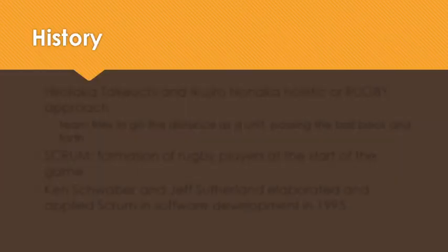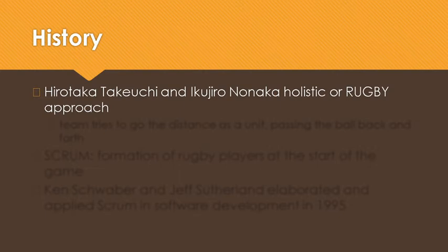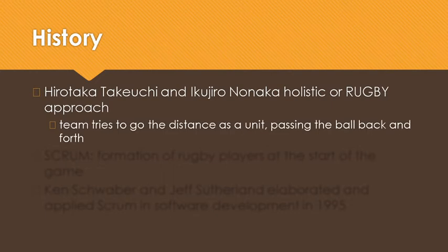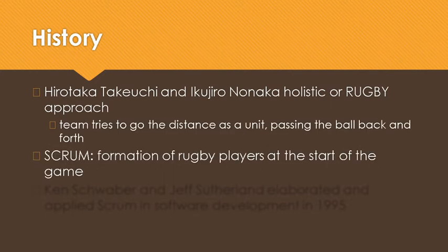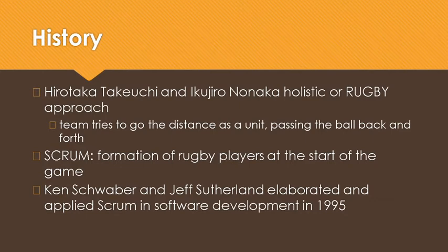Let us start by exploring the history of Scrum. The history of Scrum starts in 1986. That year, two Japanese business experts, Hirotaka Takeuchi and Ikujiro Nonaka, introduced the term in the context of product development. The name Scrum was derived from an activity during a rugby match where the team tries to go the distance as a unit, passing the ball back and forth.